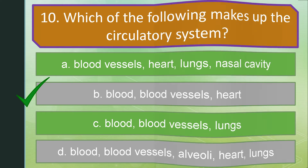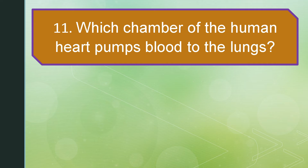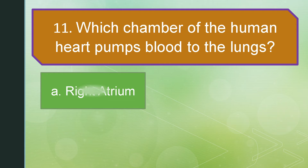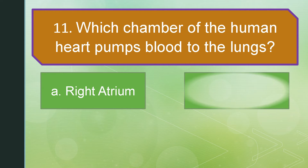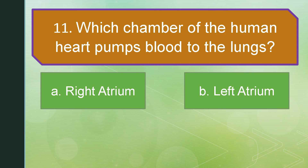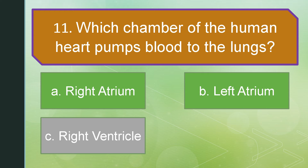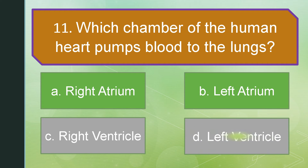Question number 11. Which chamber of the human heart pumps blood to the lungs? Is it letter A: Right atrium? Letter B: Left atrium. Letter C: Right ventricle. Letter D: Left ventricle. The answer is letter C: Right ventricle.